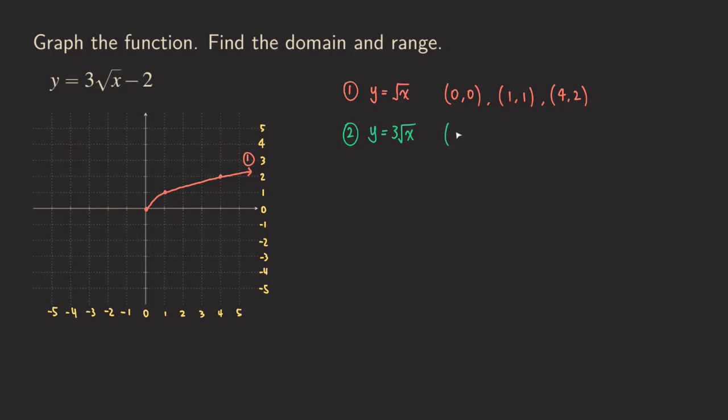We are writing down the same x values here for our ordered pairs. And then what happens is that for each x value that we plug into the parent function we are going to multiply the y value by three. So we take this y value multiplied by three and then we have our new y value.